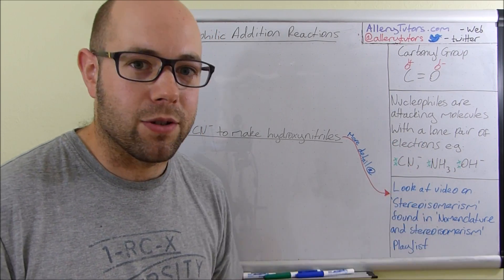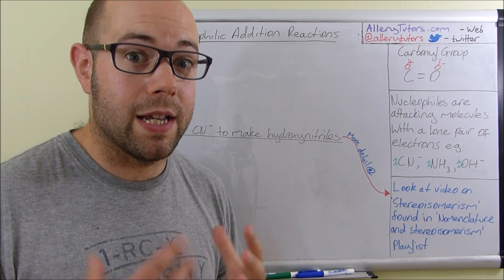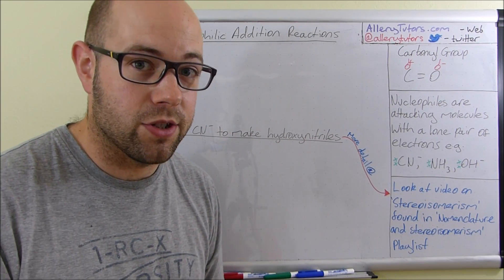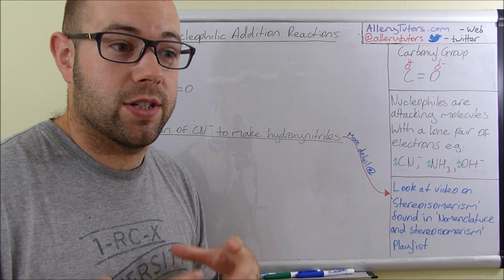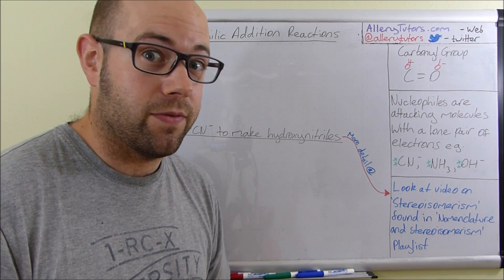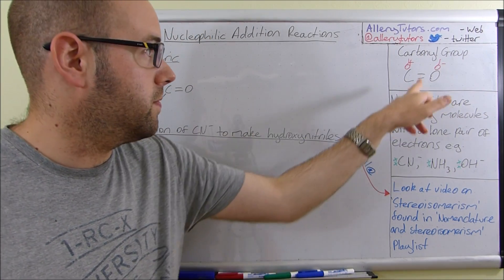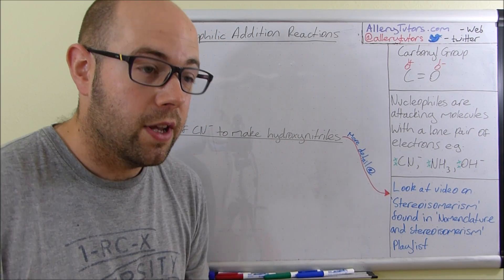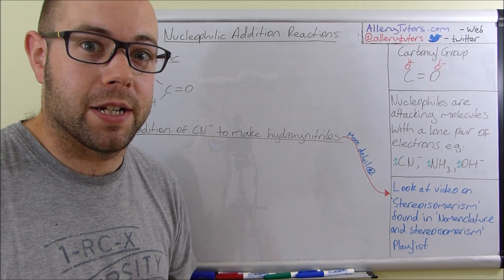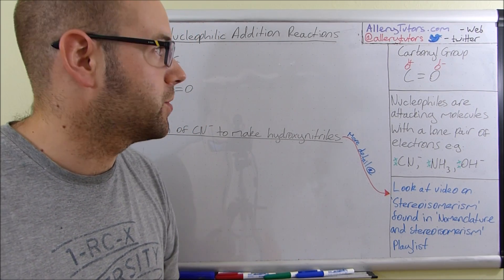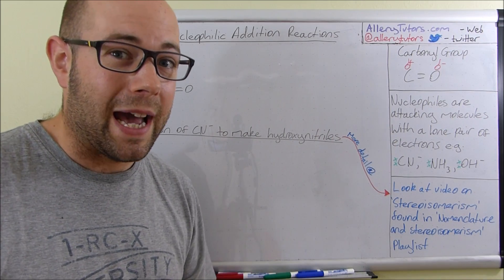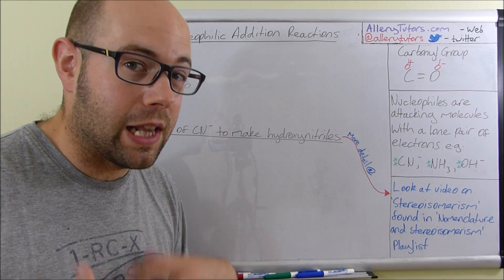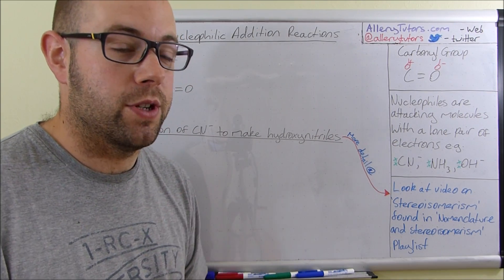The lone pair has got to be readily available, so it has to be able to be donated to an area which is electron deficient — something that's delta positive, like carbon, or even fully positive charge, like carbocations. Nucleophiles can be pretty reactive substances and these allow you to produce new products.